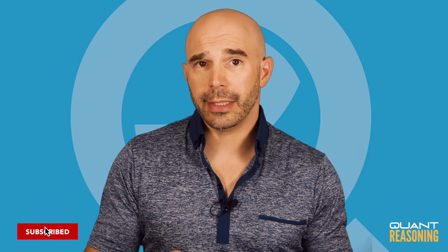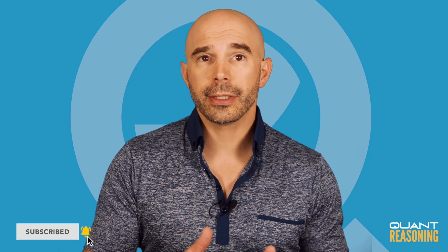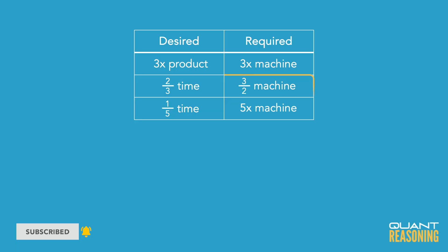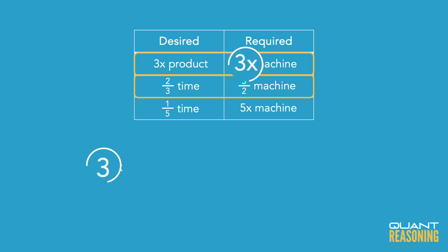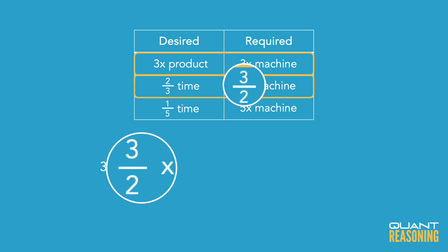Using that in this question: if I want to produce this amount in two-thirds of the time, I'll need three halves as many machines. On the one hand, we need three times as many machines because we want to produce three times as much. On the other hand, we want three halves as many machines because we want to produce the amount in two-thirds of the time.